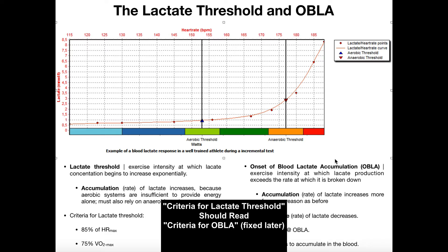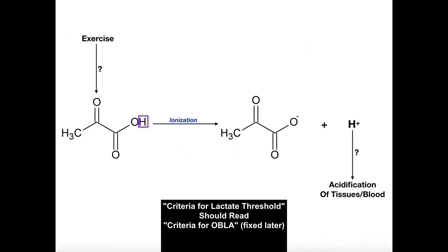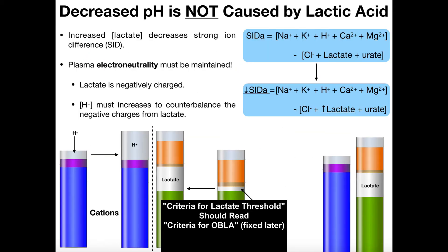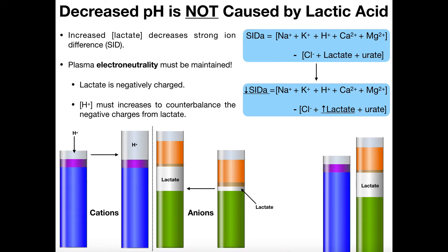In the previous video, we talked extensively about what lactate is, how it relates to lactic acid and lactate dehydrogenase and exercise, and also cleared up some misconceptions on how it actually lowers pH. We mentioned that decreased pH is not caused by lactic acid — it's not like lactic acid has a proton and that proton is what acidifies the blood. It actually has to do with something called the small ion difference and the plasma needing to maintain electroneutrality.